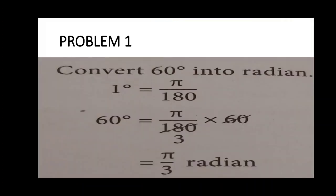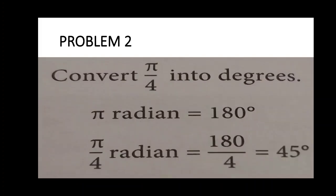Let us understand the relation between degrees and radians by solving two problems. First, convert 60 degrees into radians. Since π radians equals 180 degrees, 1 degree equals π/180. So 60 degrees equals π/180 × 60, giving π/3 radians. Second, convert π/4 radians into degrees. Since π radians equals 180 degrees, π/4 radians equals 180/4, which is 45 degrees.